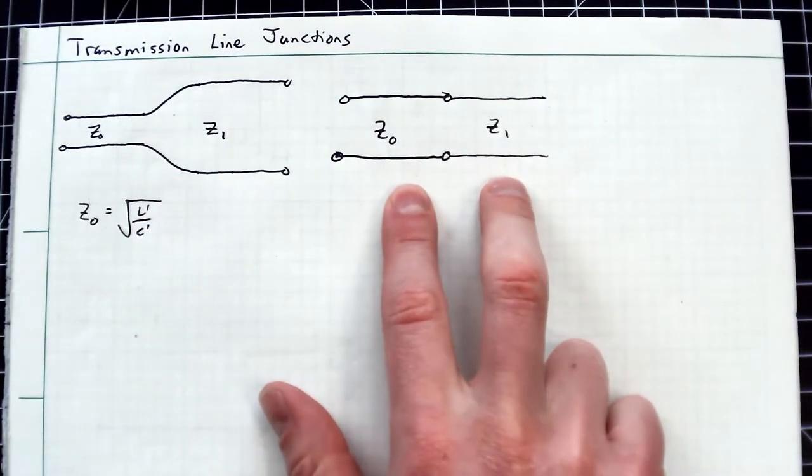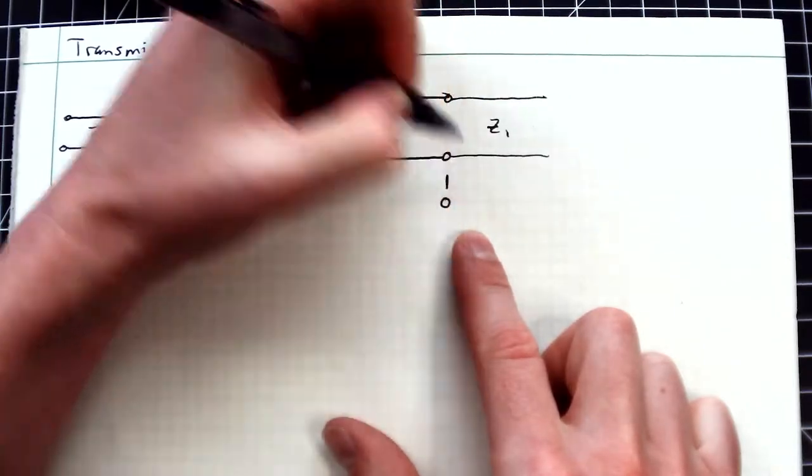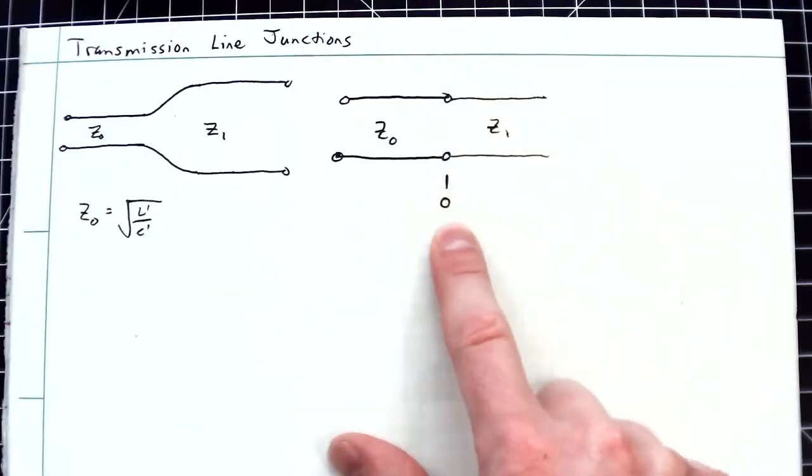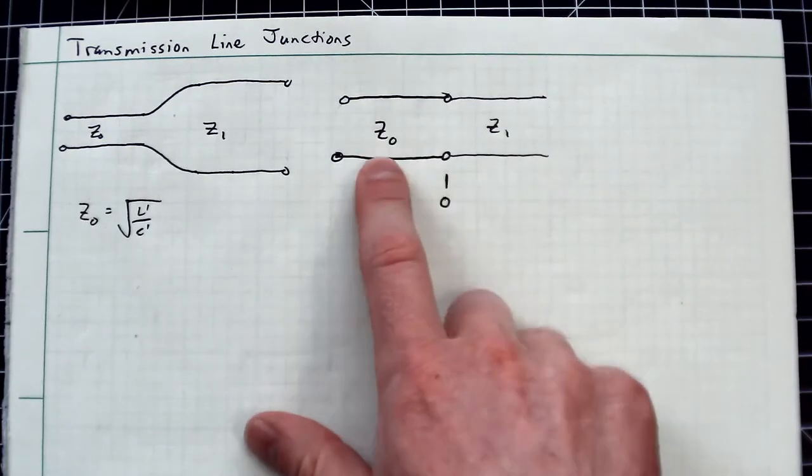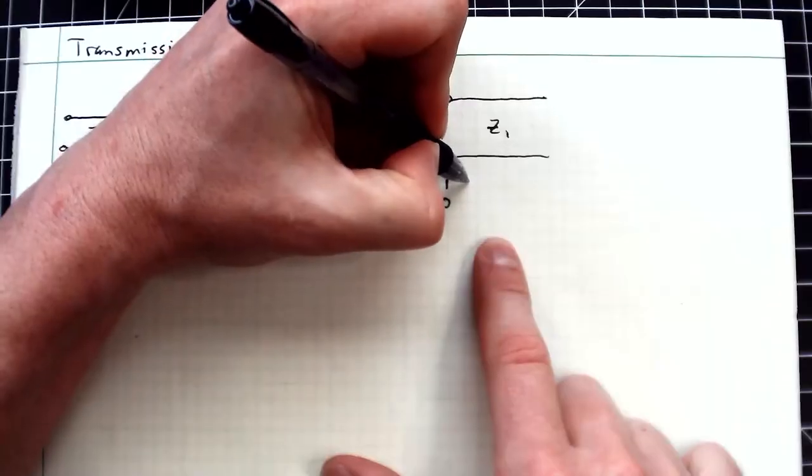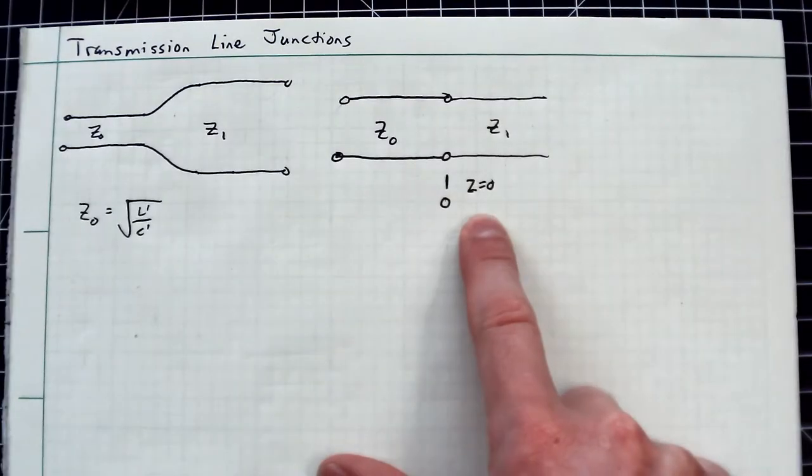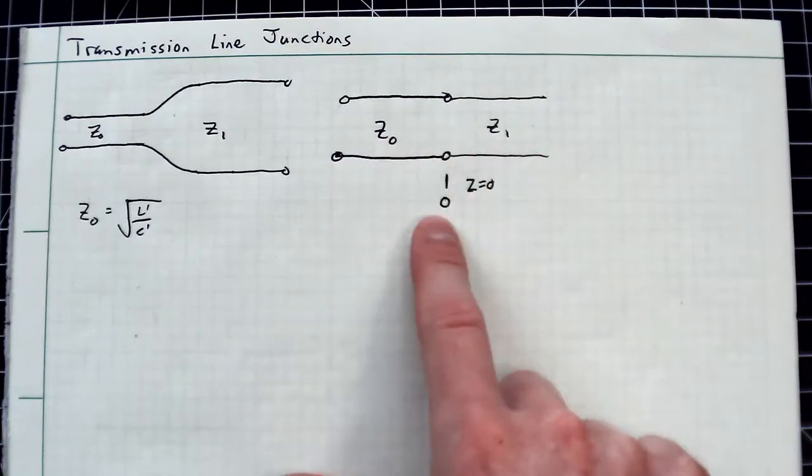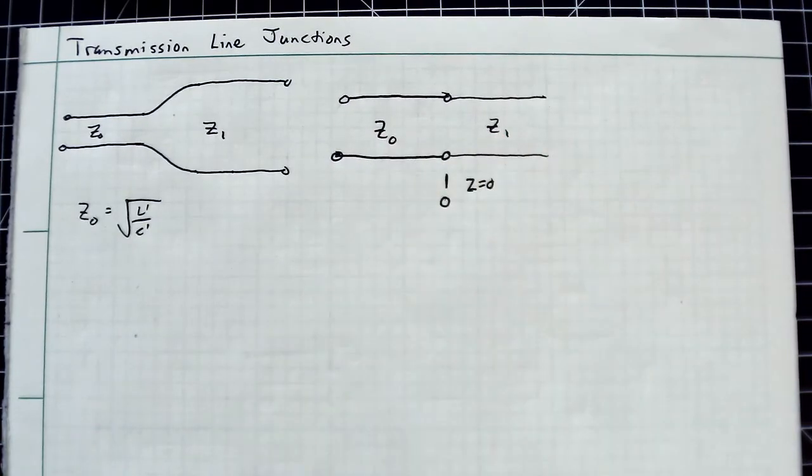I'm going to put a little zero here for my origin of coordinates. Bear in mind, these are capital Zs, and we use a lowercase z to indicate my spatial position. Try not to confuse lowercase z with capital Zs.